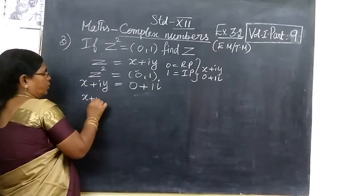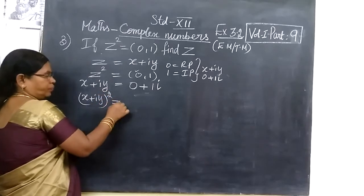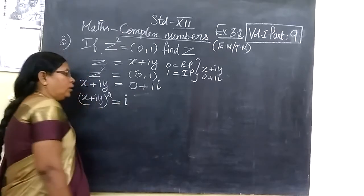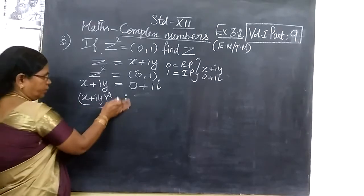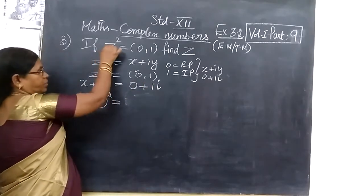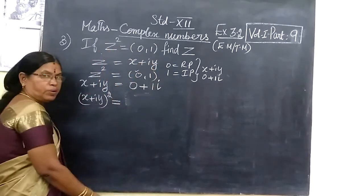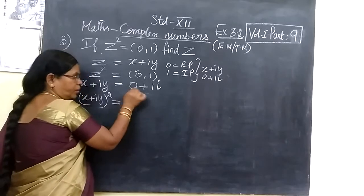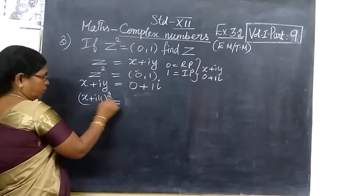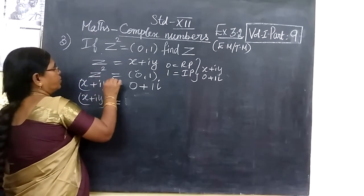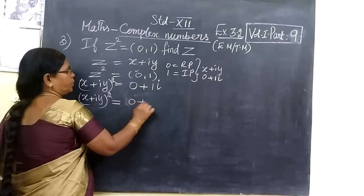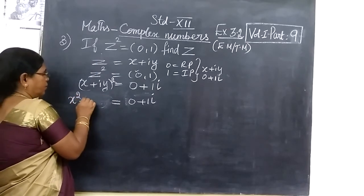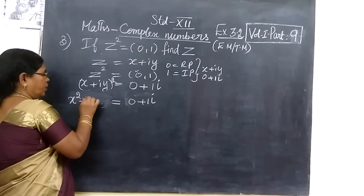We write x plus iy, whole square. This is equal to z². Now, if you expand this — x plus iy whole square — this gives x² plus b², where b² gives i²y². Then the 2ab term gives 2xy. So we get x² plus i²y² plus 2ixy, and this is equal to 0 plus 1i.